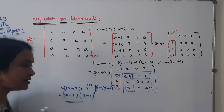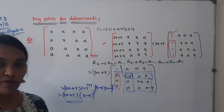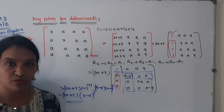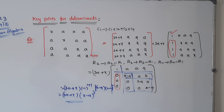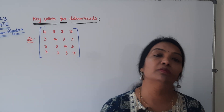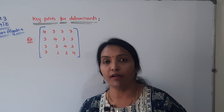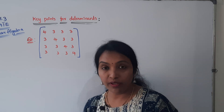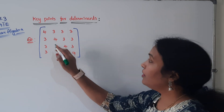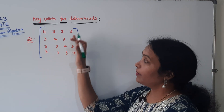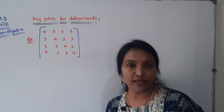The final answer is (3a + x)(x − a)³. This is the answer for this type of problem. We can substitute this formula whenever we have the same diagonal pattern with the same repeated off-diagonal element, where above and below the diagonal is the same value.